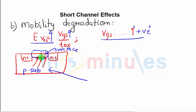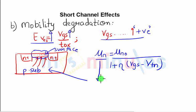So in very simple language, how the mobility is degraded is: mu n equals mu n o upon 1 plus eta times VGS minus VTN, where mu n is the mobility of electrons when VGS is normal, mu n o is the mobility when VGS is increasing constantly.